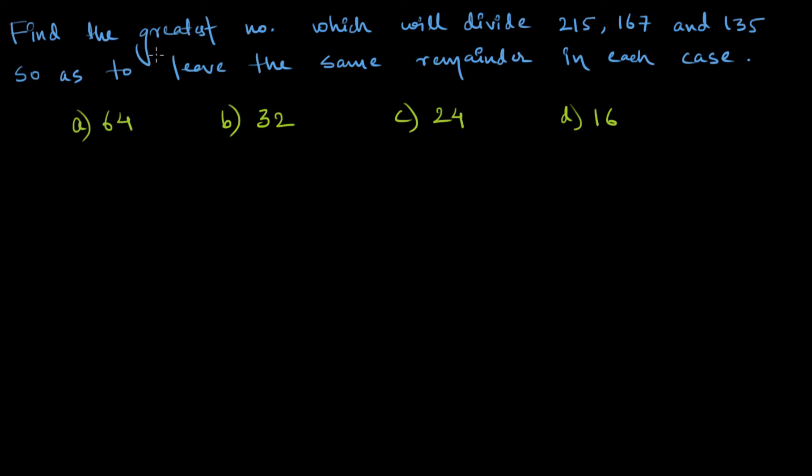Find the greatest number which will divide 215, 167, and 135 so as to leave the same remainder in each case.